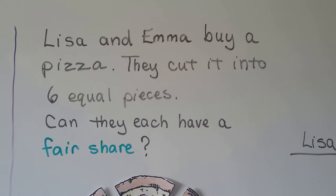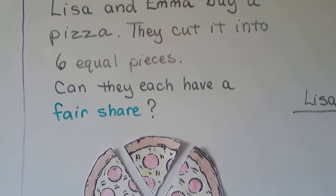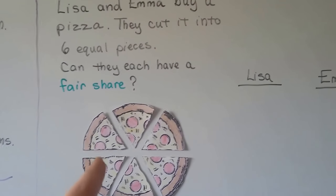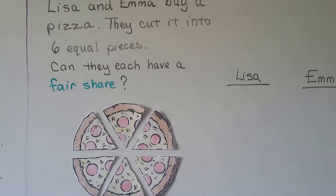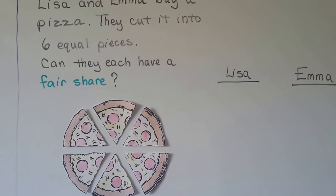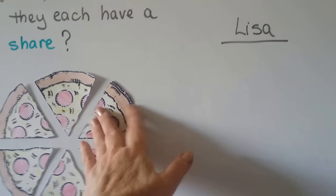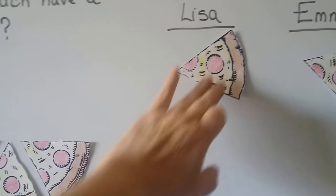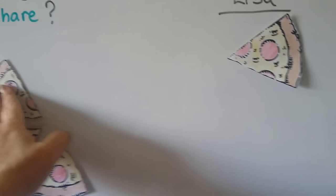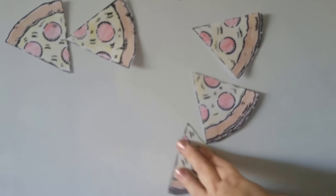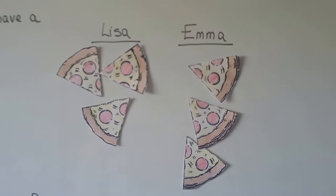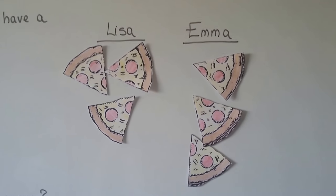Lisa and Emma buy a pizza and cut it into six equal pieces. Can they each have a fair share? We can give one piece to Emma, one to Lisa, another to Emma, another to Lisa, another to Emma, and the last to Lisa. They each got three pieces and they have fair shares.